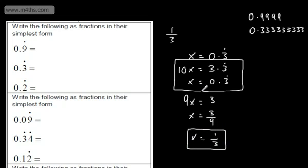So all we've done is let x be equal to 0.3 recurring, then multiplied it by 10. The idea with all of these is to get the pattern the same after the decimal point, and then we simply subtract downwards.